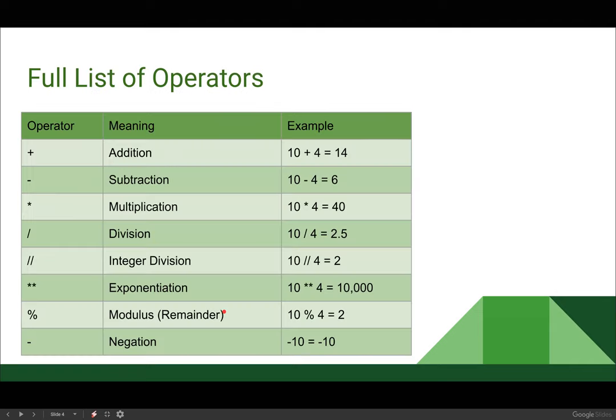Here is a full list of the operators we have available. If you took intro to programming last year, the version of Python we're using in this class is slightly different from last year. And one of the biggest differences is in the integer division. So we have, there's our four most basic addition, subtraction, multiplication, and division. We use an asterisk for multiplication.